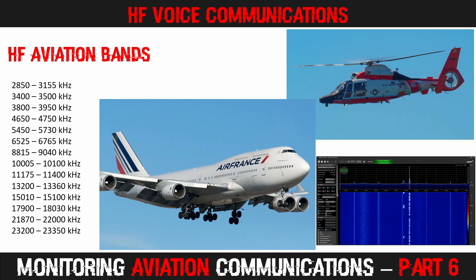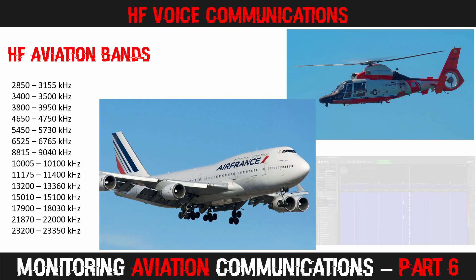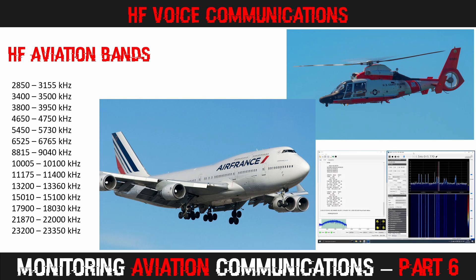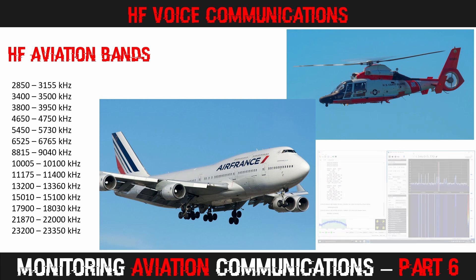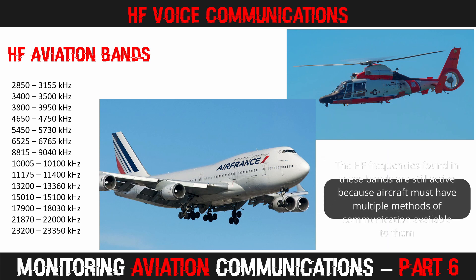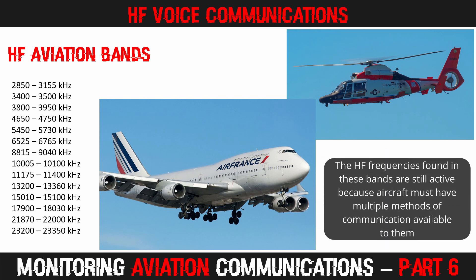Aeronautical communications are always conducted in upper sideband, or USB for short. A lot of air traffic control communications over remote areas are now transmitted via satellite, and I will be showing you how to receive those satellite signals in an upcoming episode. However, aircraft still must maintain an active HF communication system as a backup. As a result, these frequencies are used every day, with flights checking in when entering oceanic areas and crossing FIR boundaries.